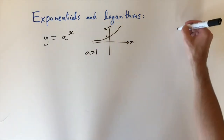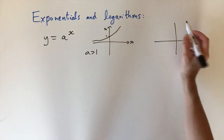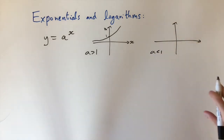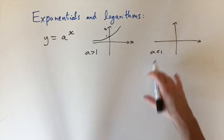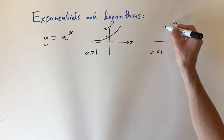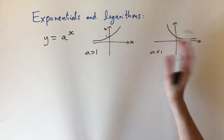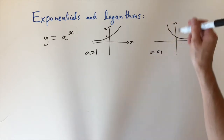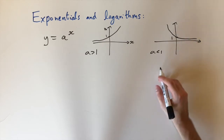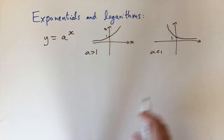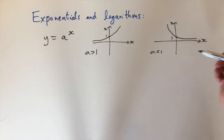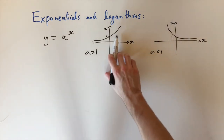On the other hand, if a is less than 1 we get a similar shape, but instead of increasing it's going to decrease — because if we have a number less than 1 and we take powers of it, this number goes to 0 very quickly. So instead of going up it goes down. It's essentially reflected along the vertical y-axis. This is again the y-intercept at 1, and this function decays slowly in one direction but grows very quickly going the other way.